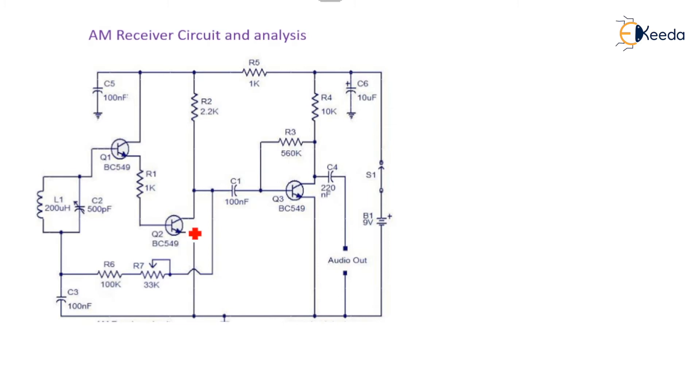Now, emitter follower prevents loading of the tank circuit. Here, the tank circuit is L1C2. Out of that, L1 is serving as an antenna also.